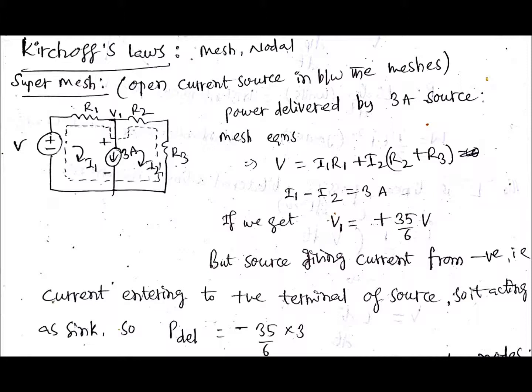That means it is acting as sink. Here the source you are considering is 3 amperes. So as the current is entering to positive terminal of the source, that means it is acting as sink, even though it is a source in the entire circuit, it is acting as a sink.